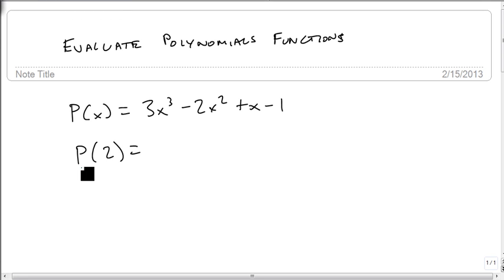Well, since we're evaluating a function, we take whatever is in parentheses and replace every variable that we see. So we get 3(2)³ - 2(2)² + 2 - 1.